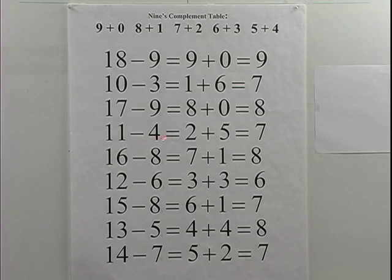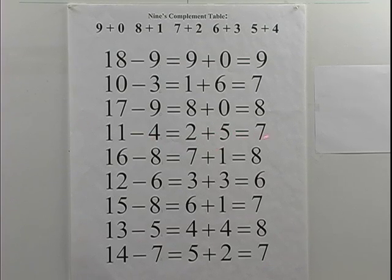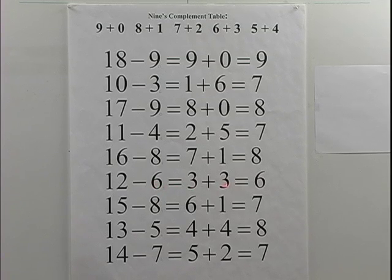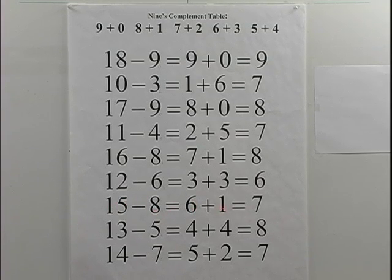Eleven minus four: one and one is two; nine's complement of four is five; two plus five is seven. Eleven minus four equals seven. Correct. Sixteen minus eight: one and six is seven; nine's complement of eight is one; seven plus one is eight. Sixteen minus eight equals eight. Correct. Twelve minus six: one and two is three; nine's complement of six is three; three plus three is six. Twelve minus six equals six. Correct. Fifteen minus eight: one and five is six; nine's complement of eight is one; six plus one is seven. Fifteen minus eight equals seven. Correct.